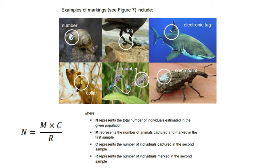Now, what do we mean by marking the smaller animals? You can either write a number on an organism, put a ring, put an electronic tag, put a collar on an animal, put a number, or use paint. You mark each and every species that you want to count — you take a sample and mark it using any of these examples. You can tie a collar on the animal, write a number, put a tag, or paint it.